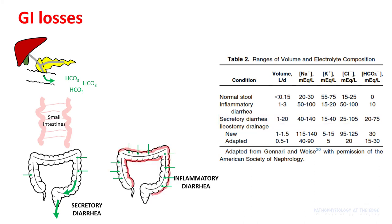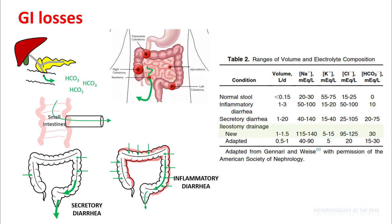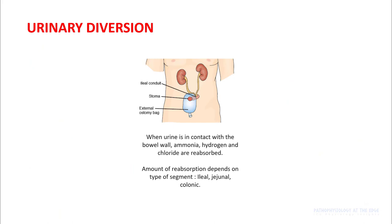In inflammatory diarrhea, there is increased secretion of bicarb in the colon, but this does not amount to a lot of bicarb. In an ileostomy, you can lose quite a lot of bicarb depending upon the site of ileostomy, and you can see that the bicarb concentration in ileostomy fluid is decently high. In patients with urinary diversion, your ureters are attached to either an ileal or jejunal conduit. When the urine is in contact with the bowel wall, it tries to perform its function and can reabsorb hydrogen and chloride, with the amount of absorption depending upon the length of segment and where it is taken from.